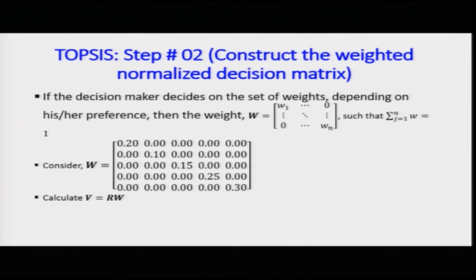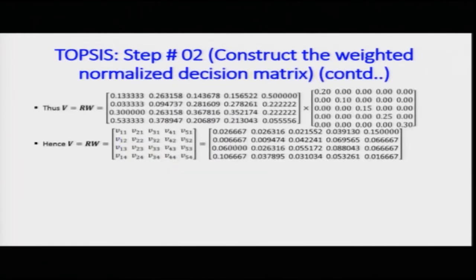For this problem, the weights are: twenty percent for criteria one, ten percent for criteria two, fifteen percent for criteria three, twenty-five percent for criteria four, and thirty percent for criteria five. This weight matrix W is of size five×five, which is n×n — corresponding to the number of criteria, unrelated to m, the number of alternatives. Multiplying R by W brings parity on a normalized scale for each criterion along with the concept of the alternatives.